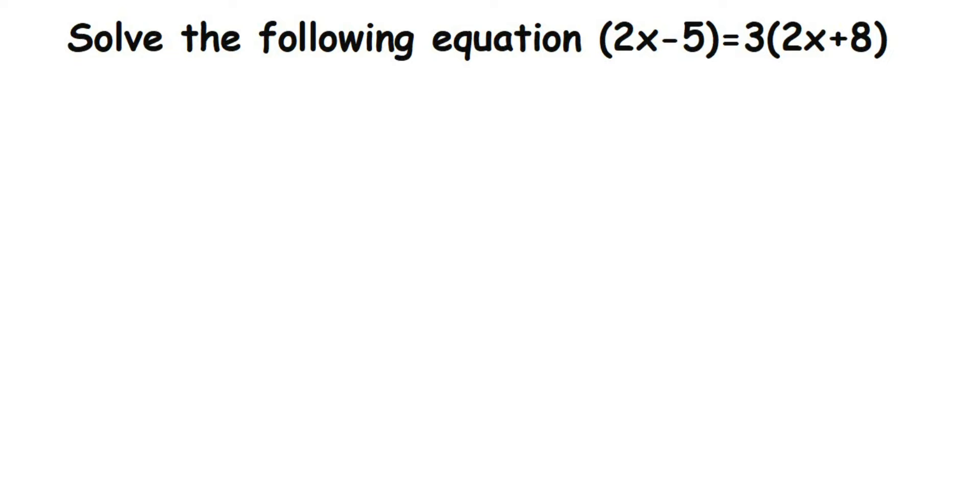Hey everyone, here's a question on equations. The question is: solve the following equation 2x minus 5 equals 3 times 2x plus 8. Now this is a linear equation in one variable because we have only one variable, which is x.